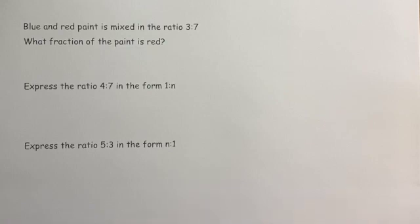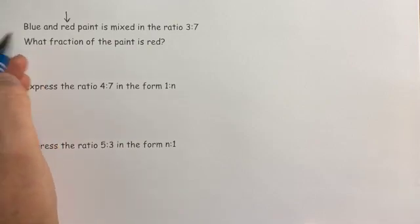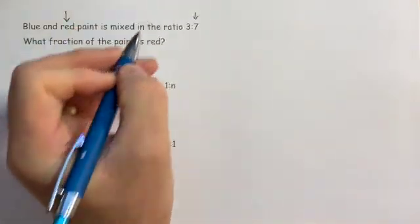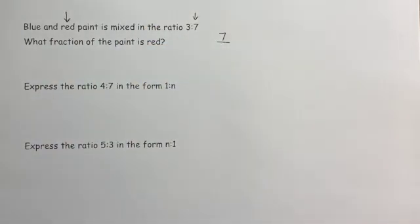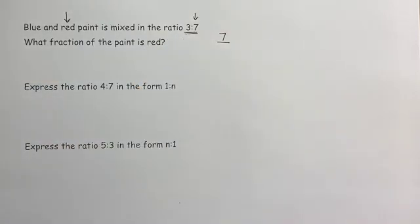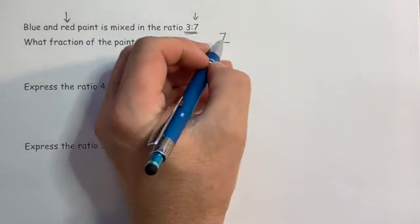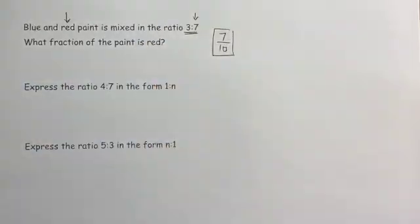In the first of three questions we are asked to express what fraction of the paint is red. Red is the second word of the two and therefore must be the second quantity of the two. So the numerator of the fraction must be seven to represent the red. But a fraction is out of so many, and it is in this case out of ten. Three parts and seven parts makes ten parts, so the fraction is out of ten. Seven tenths is our answer to that question.